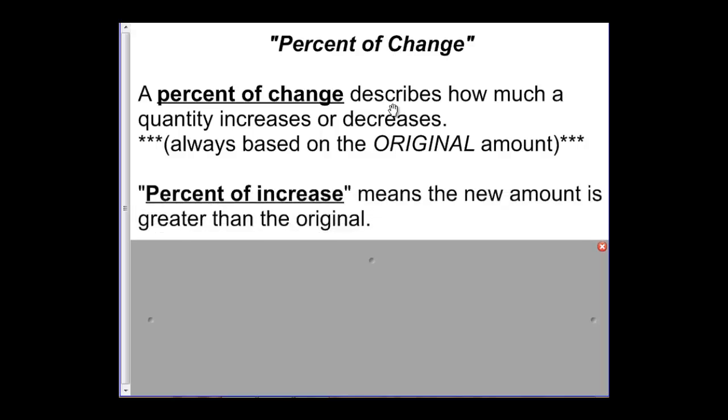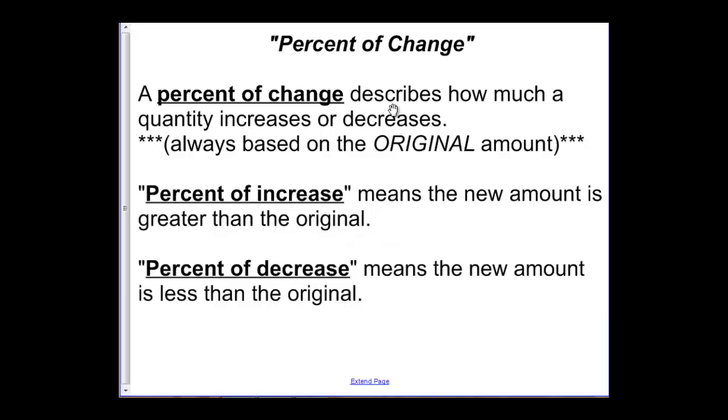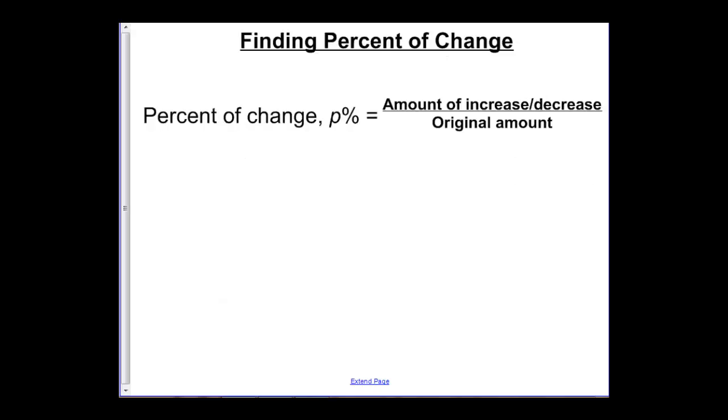Percent of increase obviously just means that the new amount is greater than the original. Percent of decrease then obviously would mean that the new amount is less than the original. Because percent of change is always about the original amount and based on the original amount, it's pretty straightforward for finding percent of change. The P percent equals the amount of increase or decrease over the original amount.